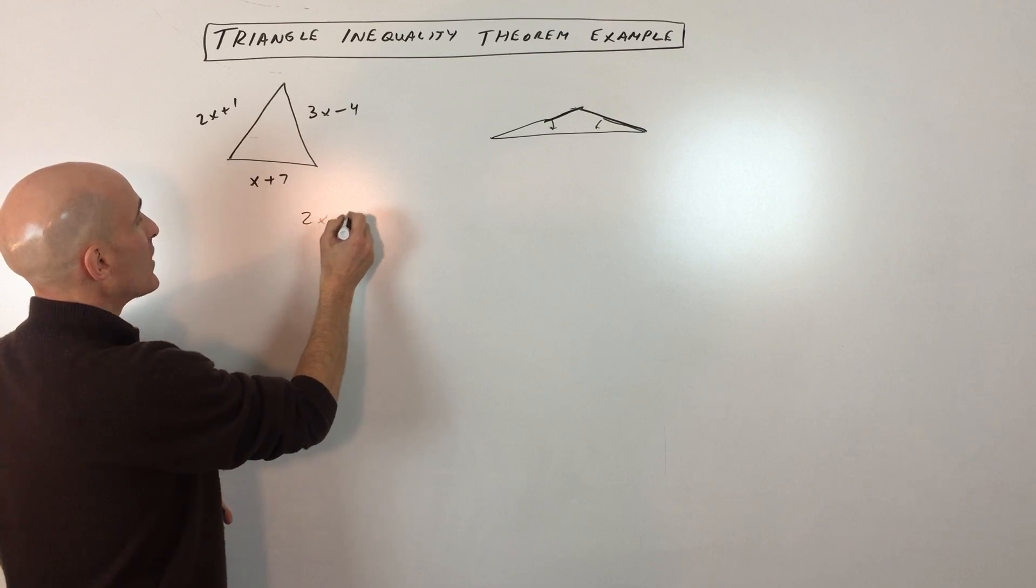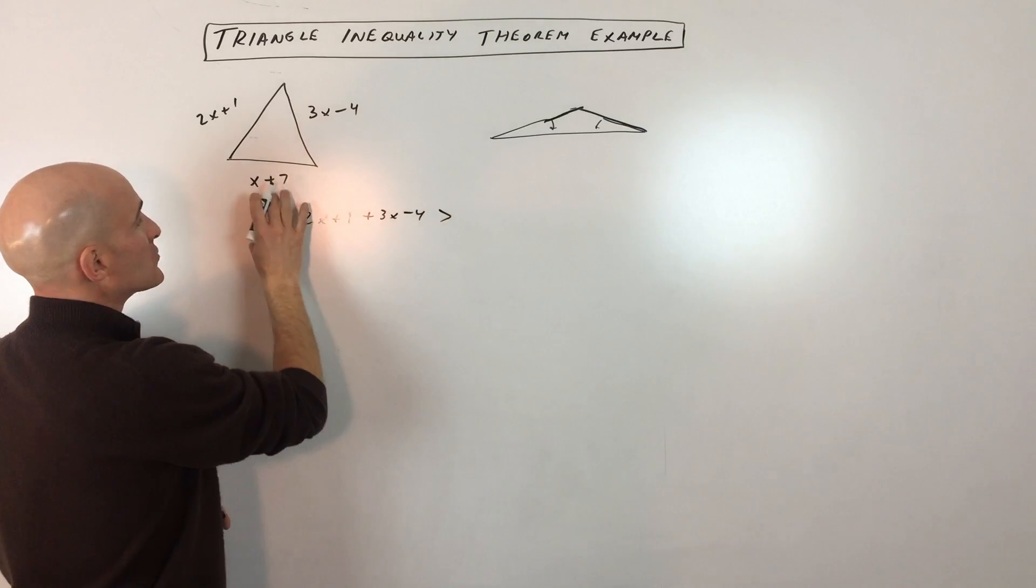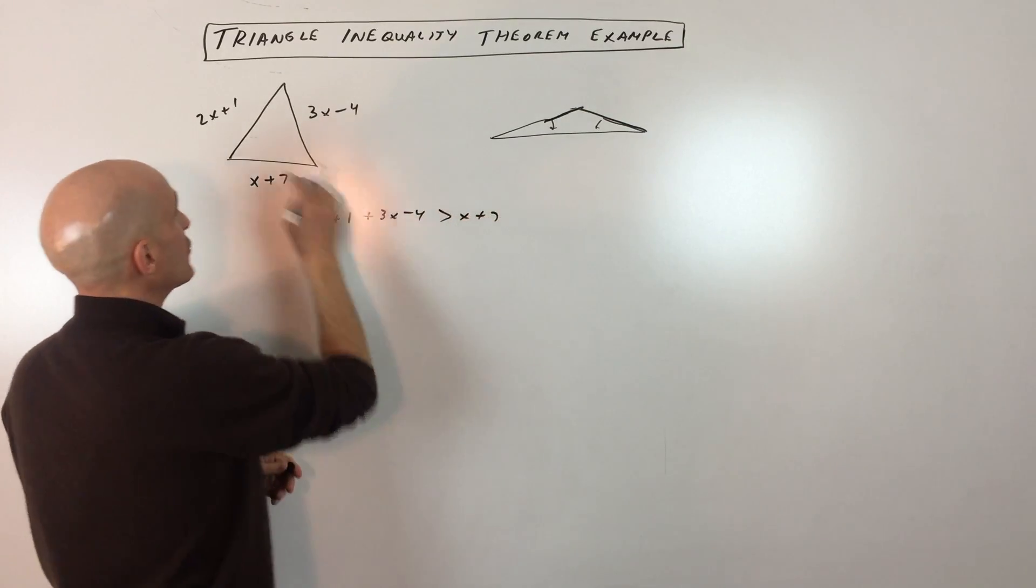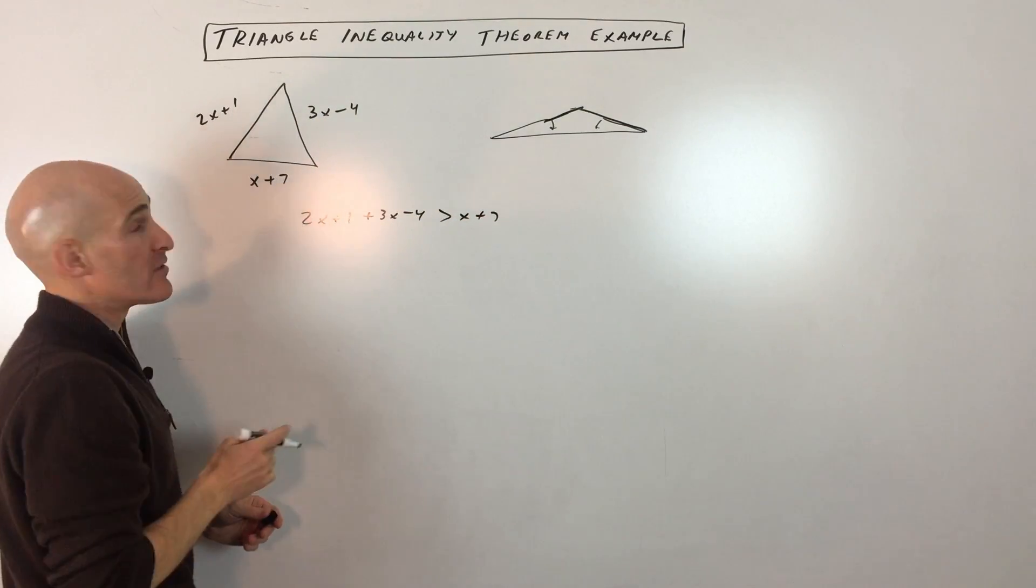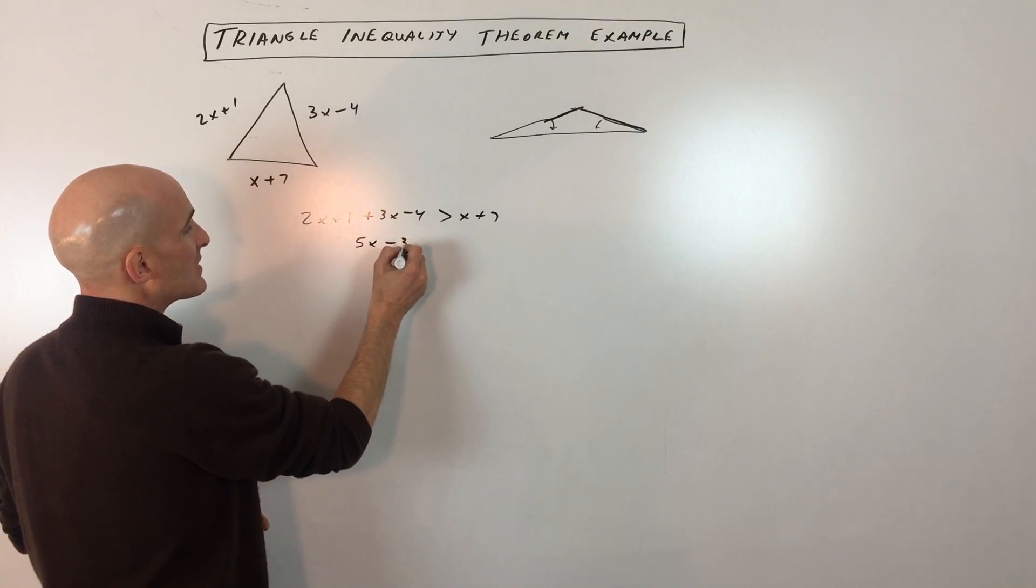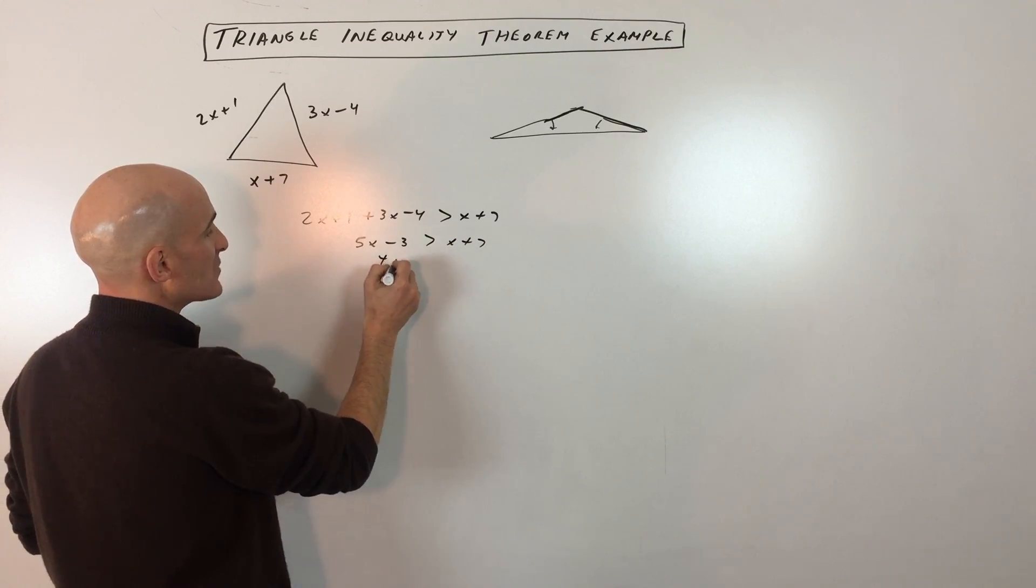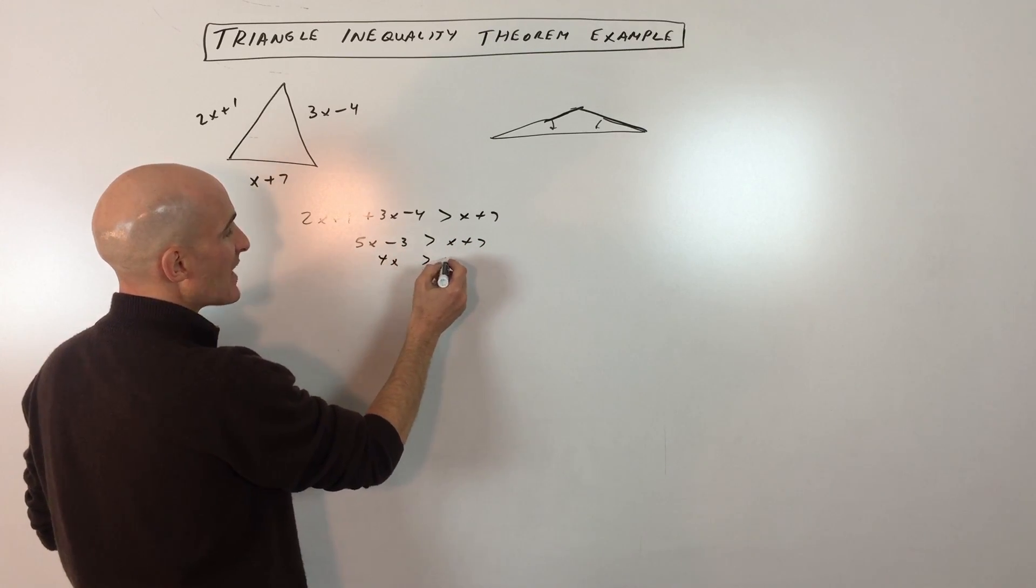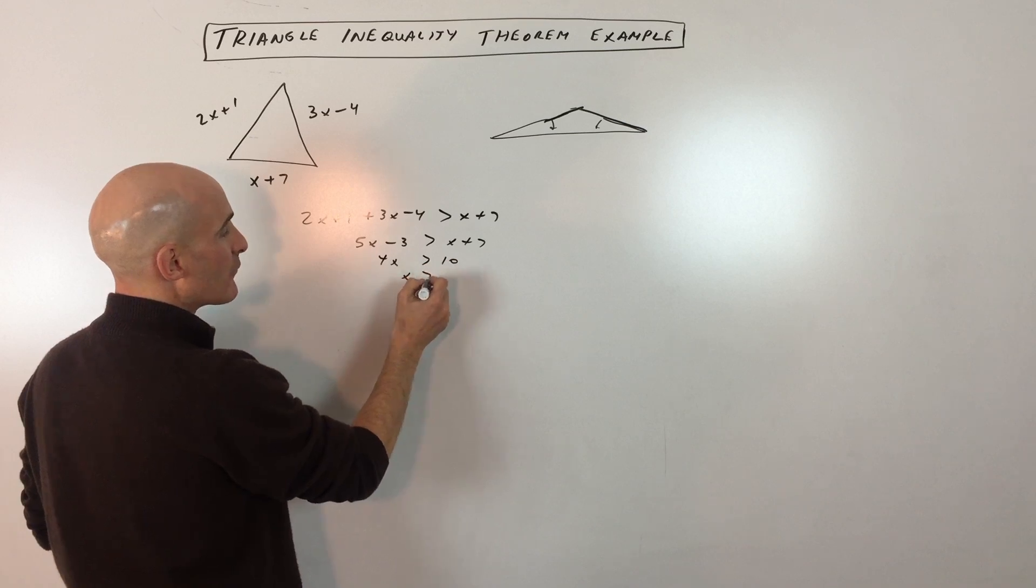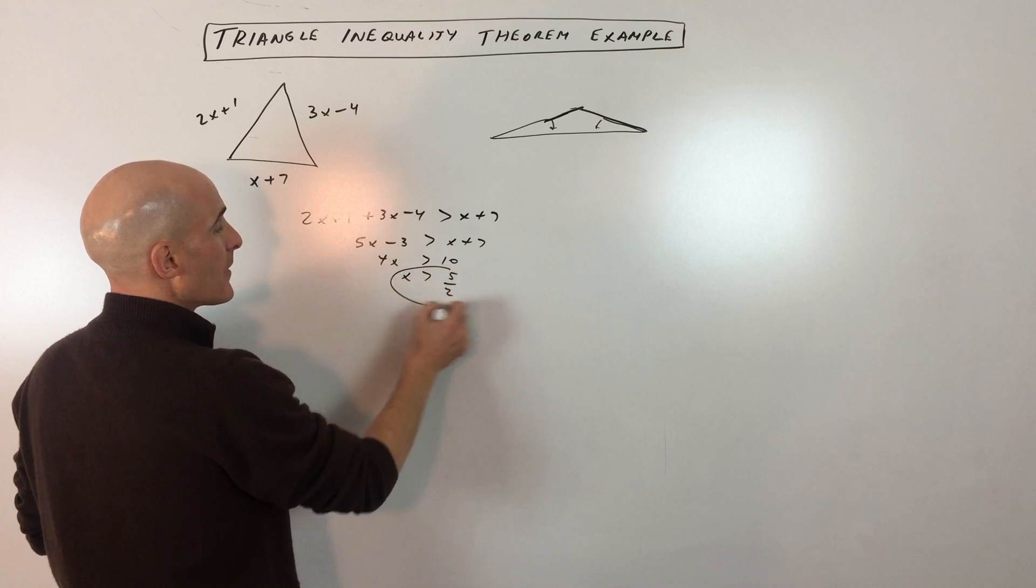The first inequality is 2x plus 1 plus 3x minus 4 is greater than x plus 7. So these two sides added together have to be more than this third side. If we do that, we get 5x minus 3 is greater than x plus 7. If we subtract x from both sides, we get 4x. If we add 3 to both sides, we get 10. And if we divide by 4, we get x is greater than 10 fourths, which is 5 halves.